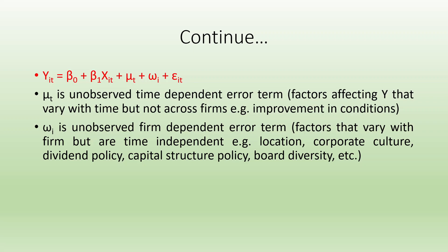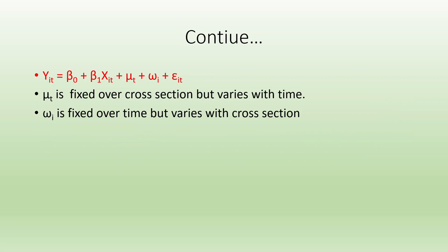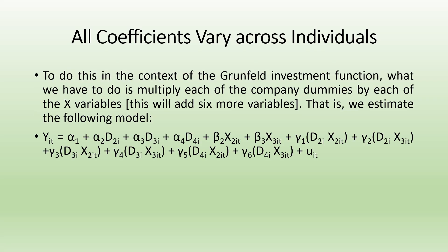Mu_T is the unobserved time-dependent error term — factors affecting Y that vary with time but not across firms, for example improvement in economic conditions. Omega_i is the unobserved firm-dependent error term — factors that vary with firm but are time-independent, for example location, corporate culture, dividend policy, capital structure policy, and board diversity. So mu_T is fixed over cross-section but varies with time, and omega_i is fixed over time but varies with cross-section.